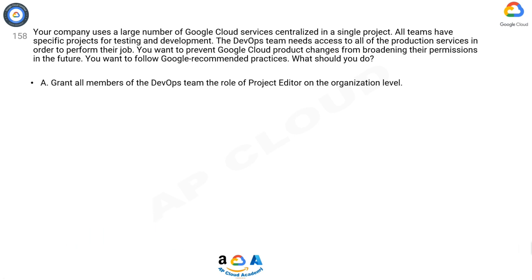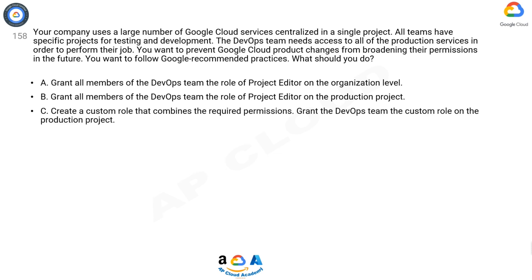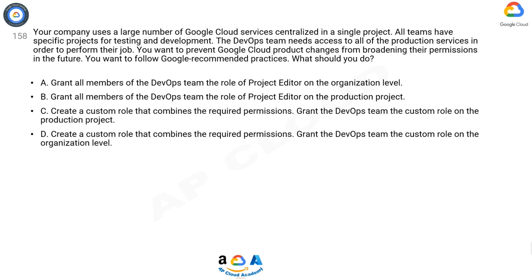You want to follow Google recommended practices. What should you do? A: Grant all members of the DevOps team the role of Project Editor on the organization level. B: Grant all members of the DevOps team the role of Project Editor on the production project. C: Create a custom role that combines the required permissions.